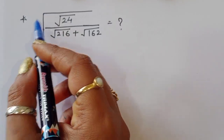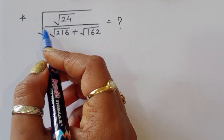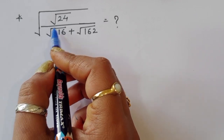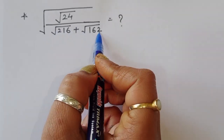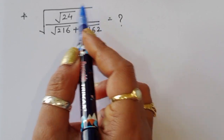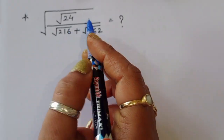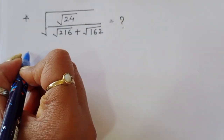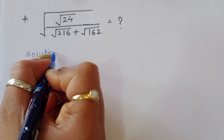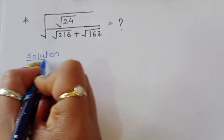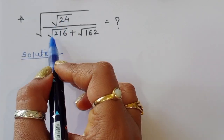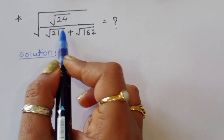The question is: given square root of 24 divided by square root of 216 plus square root of 162, we have to find the value of this term. Let's see the solution. Some terms are given: square root of 24, square root of 216, and square root of 162. First we have to simplify each term.